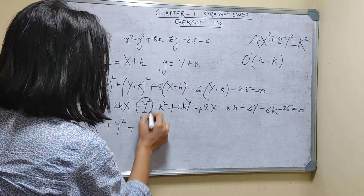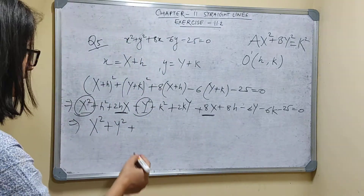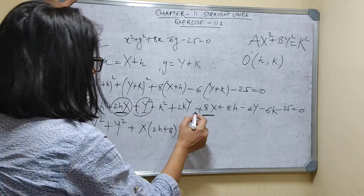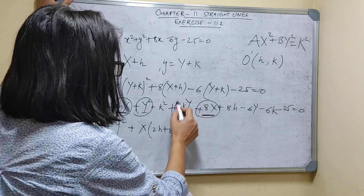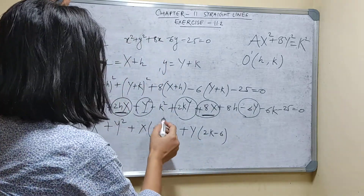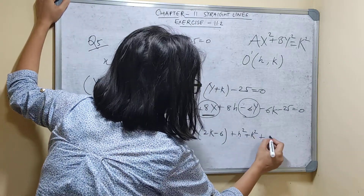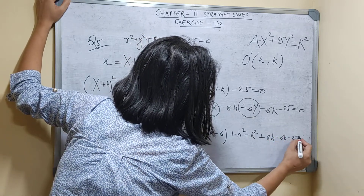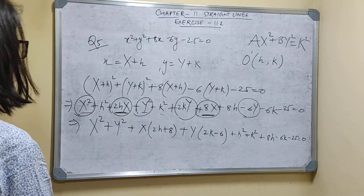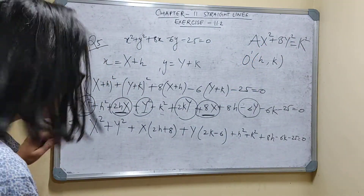Expanding and separating terms: X² + Y² plus X terms: (2H + 8)X, plus Y terms: (2K - 6)Y, plus constant: H² + K² + 8H - 6K - 25 = 0. To get the form AX² + BY² = K², we need the X and Y coefficient terms to be zero.